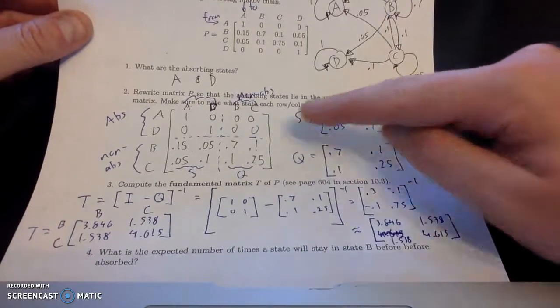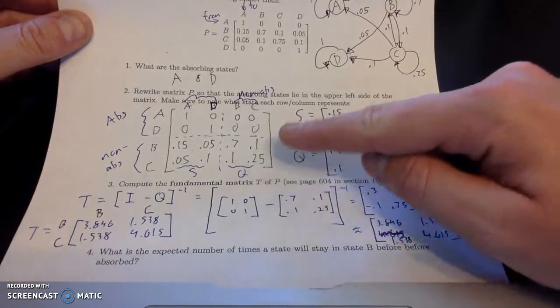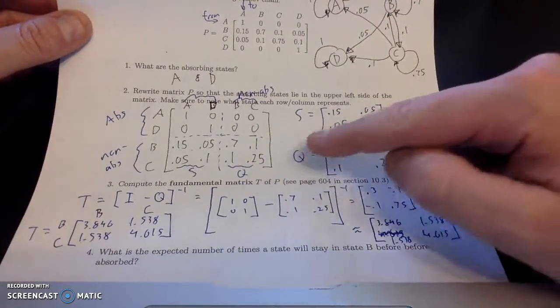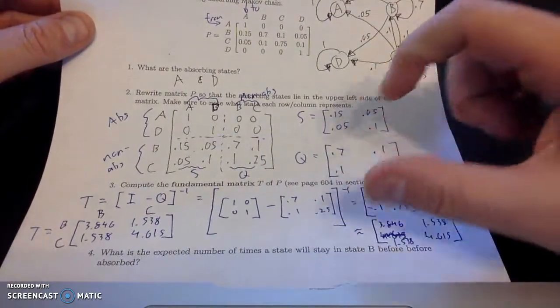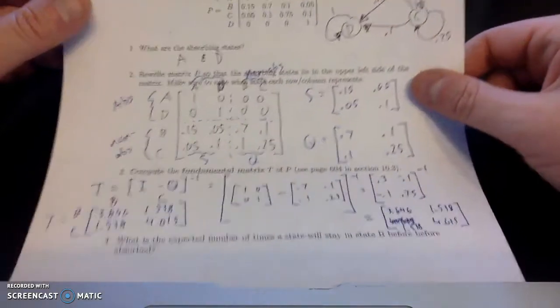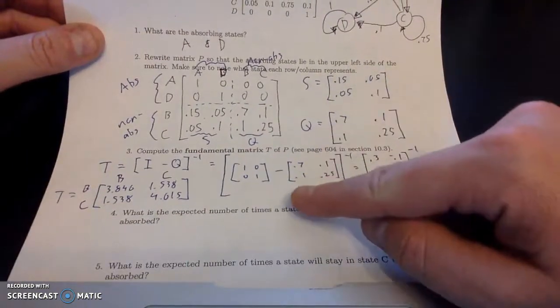Then we rewrote the matrix with the absorbing states basically in the upper left and the non-absorbing states below. And then we split apart and converted the transition matrix into four, not necessarily equal—they will be in this case—but four different partitions. And then we computed the fundamental matrix.